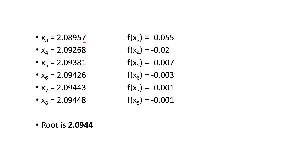At iterations x7 and x8, the decimal digits are both 0, 9, 4, 4 — the same 4 decimal digits. So the root converges. We conclude the root is x = 2.0944.